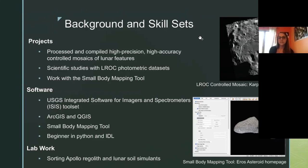Another thing I worked on similar to control mosaics was photometric data sets. LROC creates these photometric sets of specific areas of interest that have hundreds of images with phase angles ranging between 0 and 110 degrees. With this, we're able to look at the different photometric properties of different areas on the moon. An example of this is the swirl anomalies. Also at APL, I am working with the small body mapping tool team, helping update documentation and processing small body data sets.